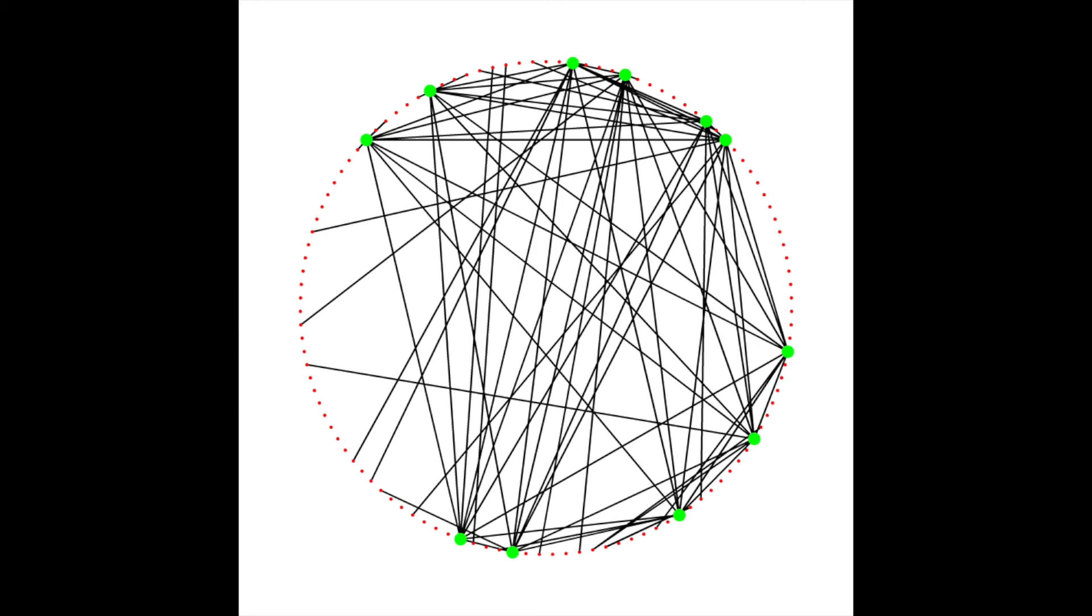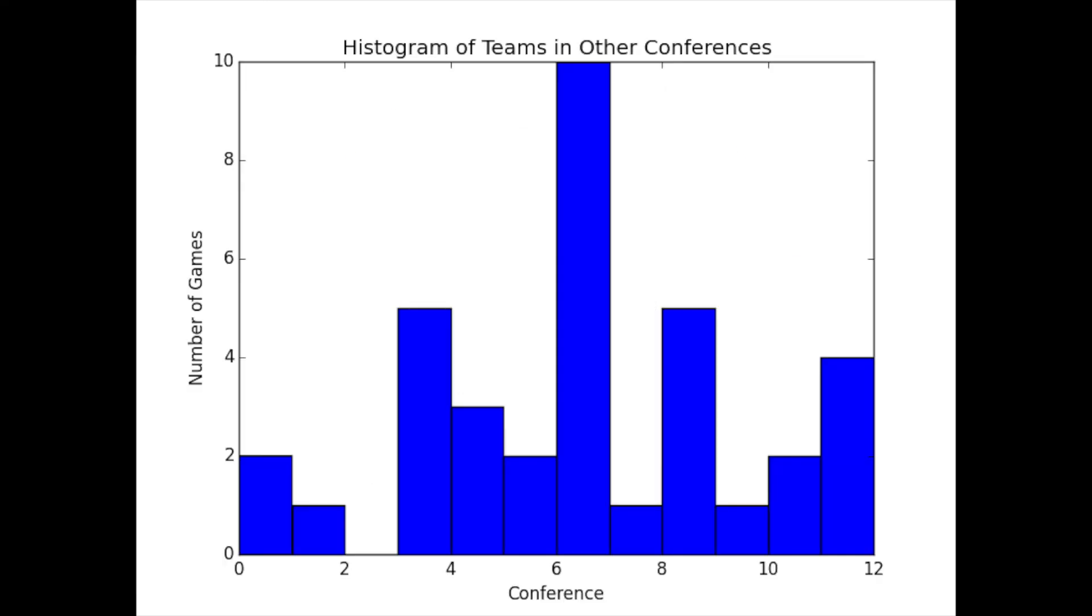Using Python to count how many times these games occur, we find that of 124 games played by Big Ten teams, 36 were played with other conferences. We can also look at what conferences the teams in the Big Ten played. Here is a histogram of teams in other conferences that teams in the Big Ten played. Conference number 6, or the Mid-American, is the most frequent. Note that conference 2 is the Big Ten conference.